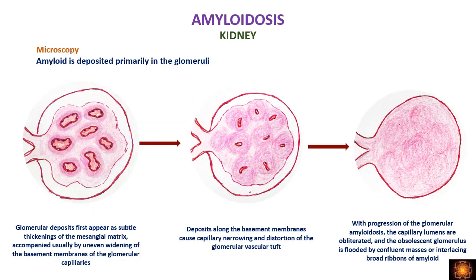Microscopically in the kidney, the deposition initially starts in the glomeruli — in the mesangium and along the basement membrane of vessels. As deposition increases, amyloid encroaches on the vessel lumen, decreasing it in size. In later stages the vessels disappear entirely and the entire glomerulus is converted into confluent masses of amyloid deposits. The glomerulus is sclerosed.